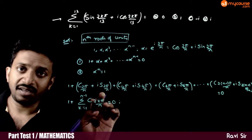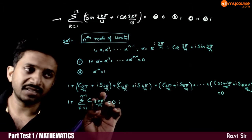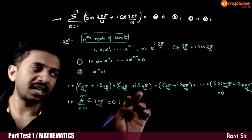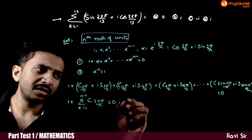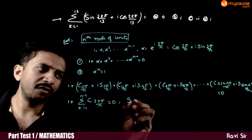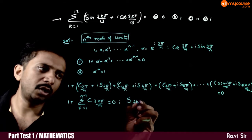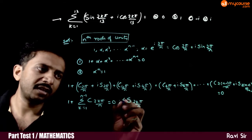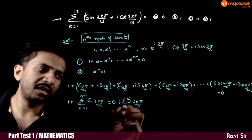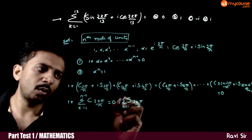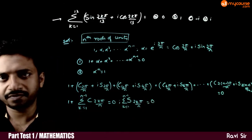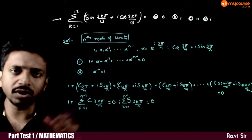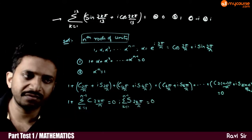And for the imaginary parts: sin(2π/n) plus sin(4π/n) plus sin(6π/n), and so on. So, sigma of sin(2kπ/n), where k equals 1 to n minus 1, is also equal to 0. These are the two key results to observe.